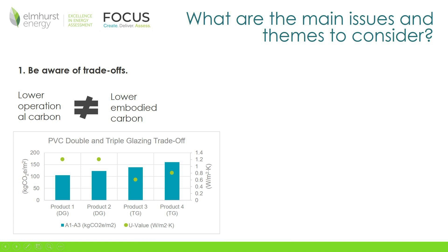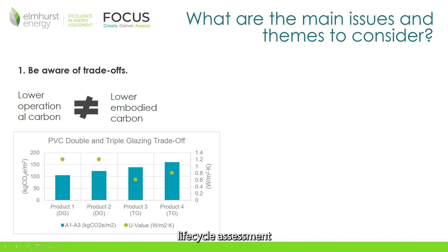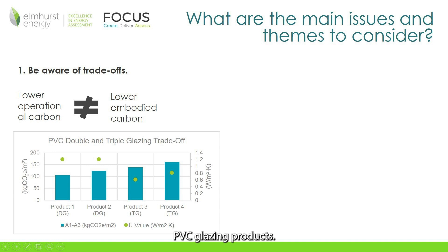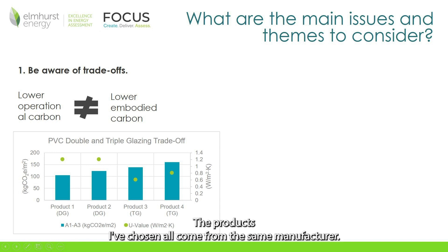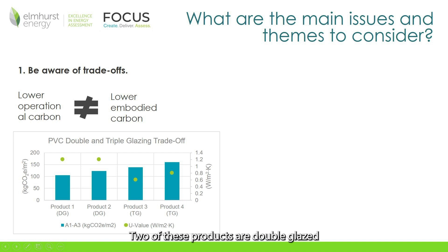As an example, I've put together a comparative life cycle assessment of four different PVC glazing products. The products I've chosen all come from the same manufacturer, who has good data regarding the A1 to A3 embodied carbon emissions, so they have EPDs. Two of these products are double glazed and two of them are triple glazed.